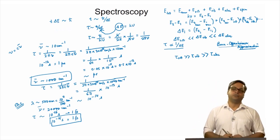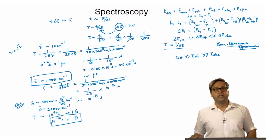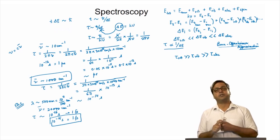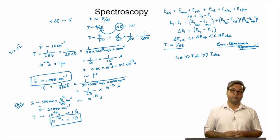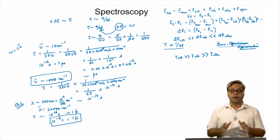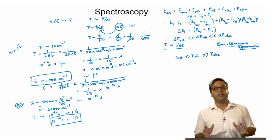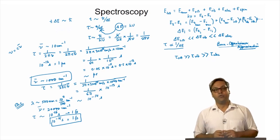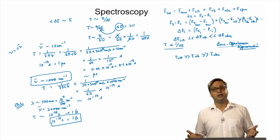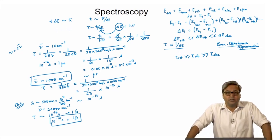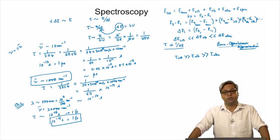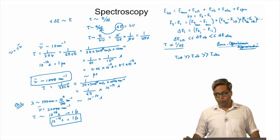In the next modules, you will study different forms of spectroscopy like rotational spectroscopy, vibrational spectroscopy, etc., in greater detail. The concepts covered in this first module will appear time and again during discussions in the later modules. We will end this module and this lecture by solving a few more problems.